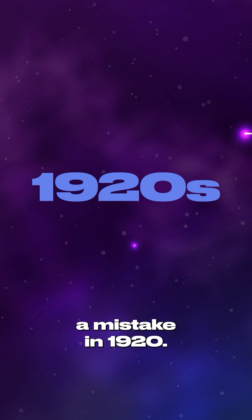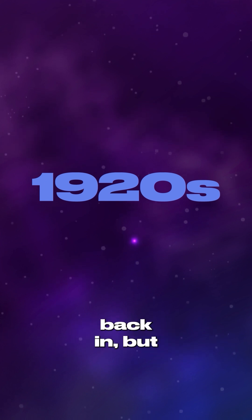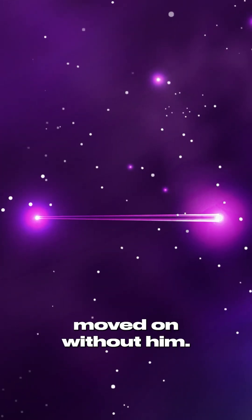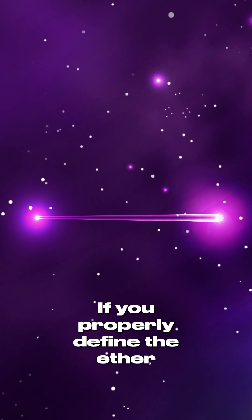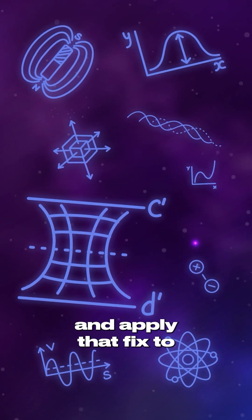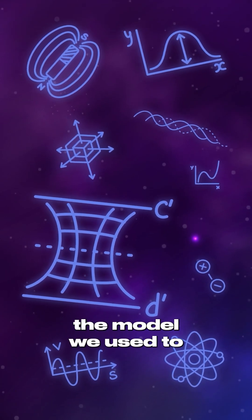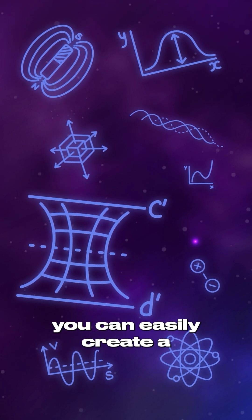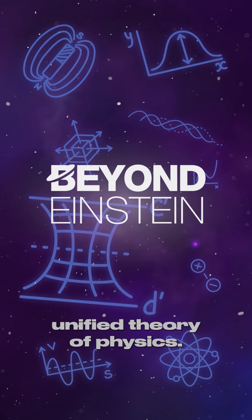He realized it was a mistake in 1920, tried to add it back in with the institution and moved on without him. So if you properly define the ether and apply that fix to the model we use to theorize the universe, you can easily create a unified theory of physics.